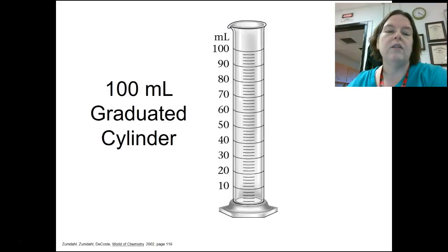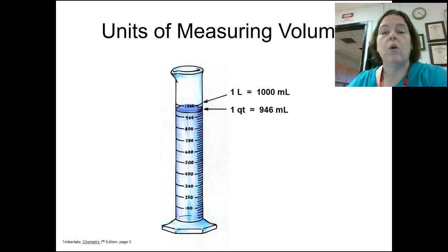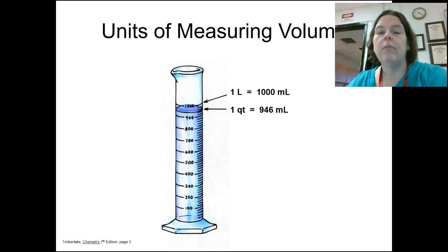The one we use most often is the graduated cylinder. This is an example of a 100-milliliter graduated cylinder. Units of measuring: we measure in liters or milliliters. A quart equals 946 milliliters, but we don't measure in quarts in science. We measure in liters and milliliters — milliliters being the smaller unit.